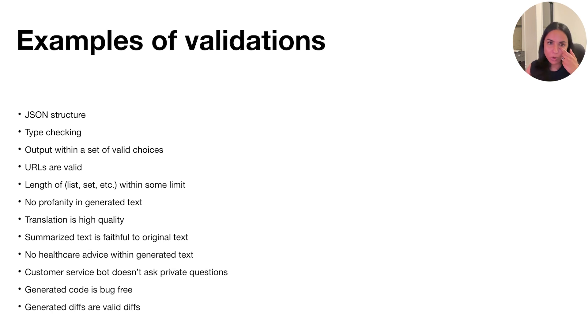Here's a quick walkthrough of some examples of validators that are offered, so obviously JSON structure and type checking is some of the common ones, but also validators about lists, about the quality of the text, like no profanity, or quality of the translation, specific validators for summarization, specific validators for not asking private questions, but any validator, any custom validator can be created and supported by the framework.